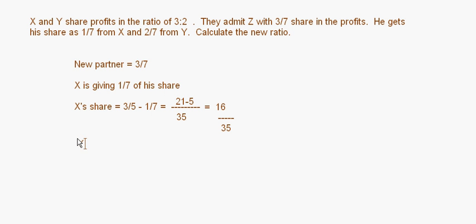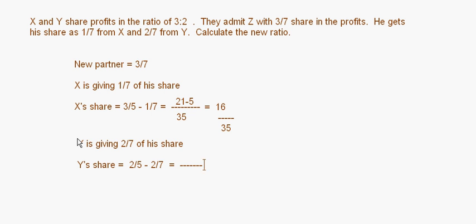Y is giving 2/7 of his share. So Y's new share equals 2/5 − 2/7. Making the denominator 35: 14/35 − 10/35 = 4/35. So Y's new share is 4/35.